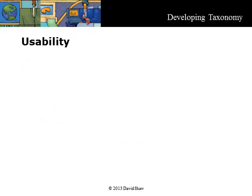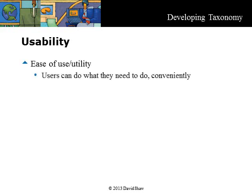Usability is a quality attribute assessing ease of use and learnability. Other key quality components in usability are efficiency, memorability, error propensity, and feelings of satisfaction. Ease of use is the utility of the taxonomy — does it provide the terms that are needed in a knowledge domain to achieve our business goals? The functionality must be provided in a means that allows users to do what they need to do, and in a method that is convenient for them.